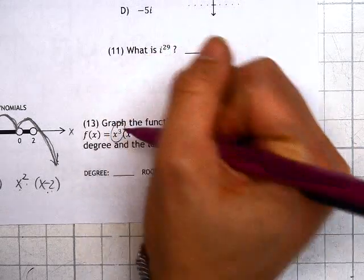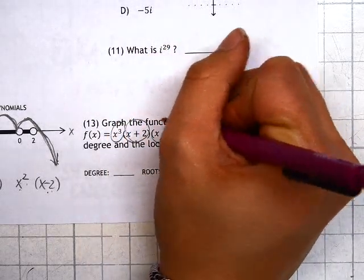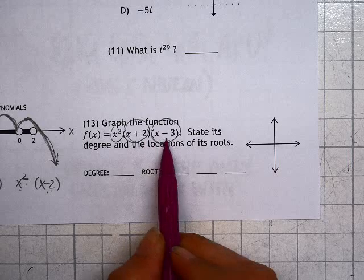Since it's giving us x cubed, x plus 2, and x minus 3, that implies we have 1, 2, 3 roots.